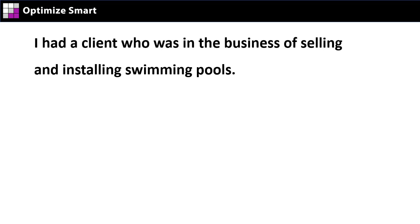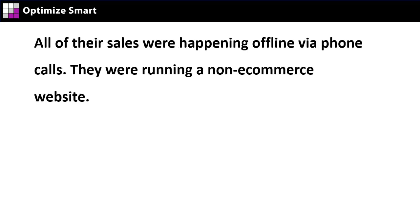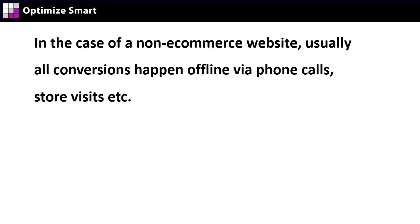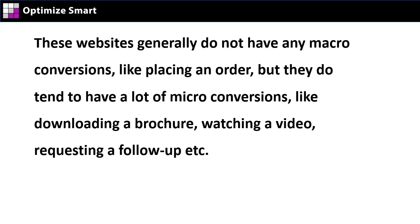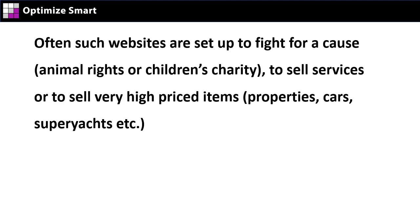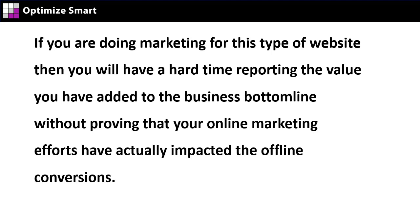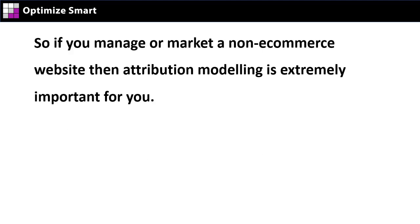I had a client who was in the business of selling and installing swimming pools. All of their sales were happening offline via phone calls — they were running a non-e-commerce website. In the case of a non-e-commerce website, usually all conversions happen offline via phone calls, store visits, etc. These websites generally do not have any macro conversions like placing an order, but they do tend to have many micro conversions like downloading a brochure, watching a video, requesting a follow-up, etc. Often such websites are set up to fight for a cause like animal rights or children's charity, to sell services, or to sell very high-priced items like properties, cars, super yachts, etc. If you are doing marketing for this type of website, you will have a hard time reporting the value you have added to the business bottom line without proving that your online marketing efforts have actually impacted the offline conversions. So if you manage or market a non-e-commerce website, attribution modeling is extremely important for you.